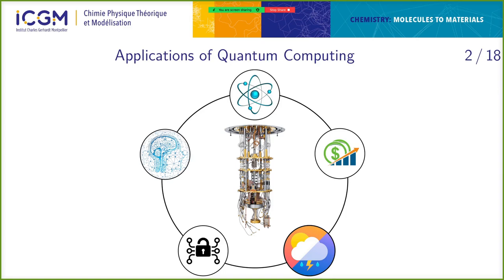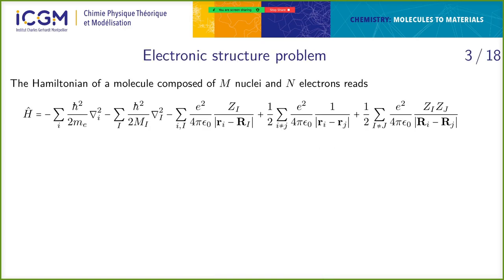Different applications of quantum computing include neural networks, finance optimization, cryptography like Shor's algorithm, and physical/chemical problems. The lecturer is interested in the electronic structure problem: a molecule with N nuclei and N electrons, described by a Hamiltonian with kinetic energy of electrons and nuclei, electron-nuclei attraction, electron-electron repulsion, and nuclei-nuclei repulsion. Using the Born-Oppenheimer approximation, we decouple the nuclei from the electrons and obtain an electronic Hamiltonian with atomic units.